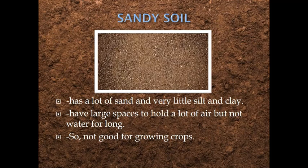Sandy soil — the name itself tells us that it has a lot of sand with very little silt and clay. The color is grayish brown. Sandy soil particles have large spaces in between so they can hold a lot of air but not water for long. So it is not good for growing crops.